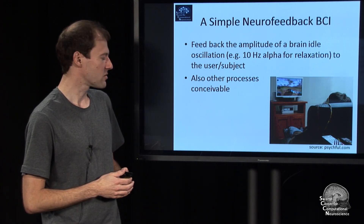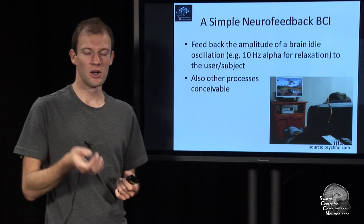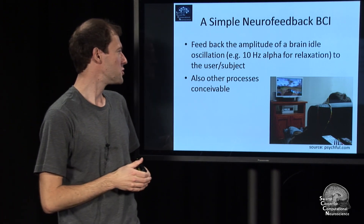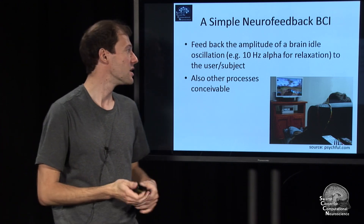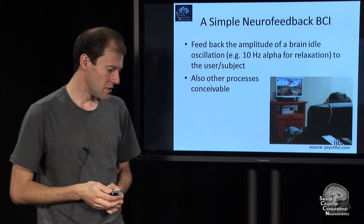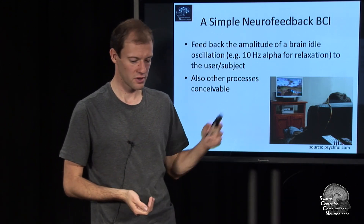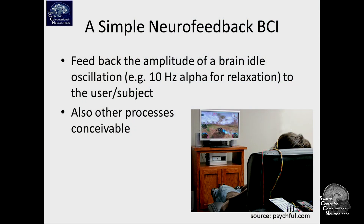It turns out in many cases these are very basic and primitive systems. They use one channel and take the amplitude of a single frequency, such as 10 hertz in occipital cortex, as a substitute for relaxation. As discussed, there are certain oscillations in the brain corresponding to idling activity in neurons — called idle oscillations. 10 hertz is approximately the right frequency for occipital cortex, which is related to visual processing.